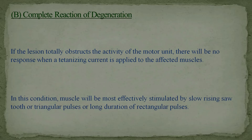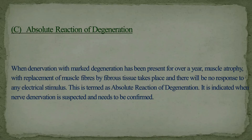Next is complete reaction of degeneration: if the lesion totally obstructs the activity of the motor unit, there will be no response when tetanizing current is applied. In this condition, the muscle will be most effectively stimulated by slow-rising short-tooth or triangular pulses, or long-duration rectangular pulses. Finally, absolute reaction of degeneration occurs when denervation with marked degeneration has been present for over a year, causing muscle atrophy with replacement of muscle fibers by fibrous tissue, resulting in no response to any electrical stimulus.